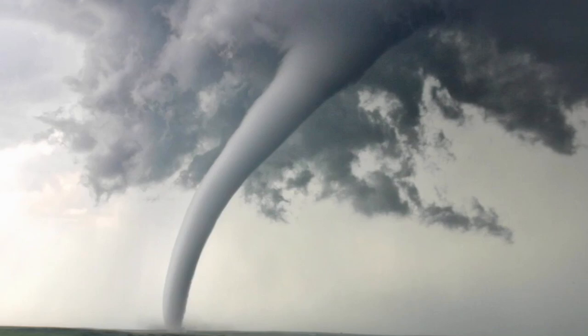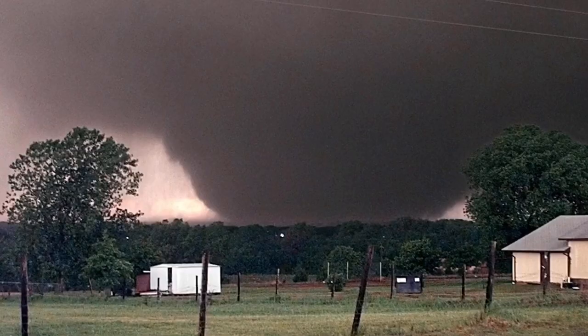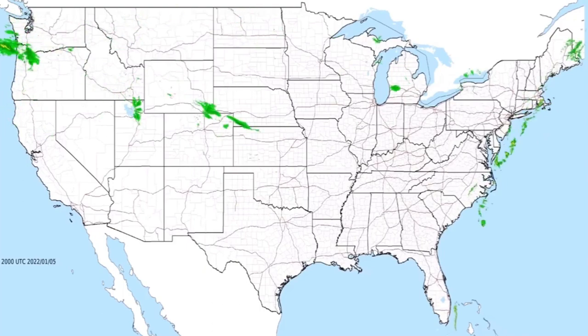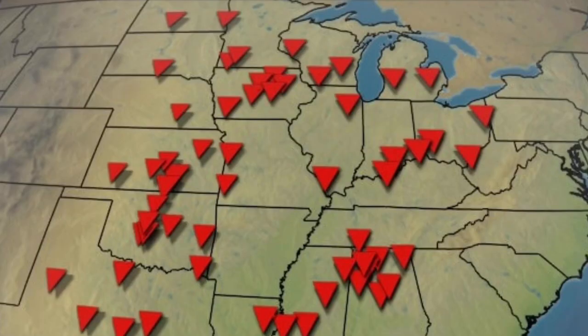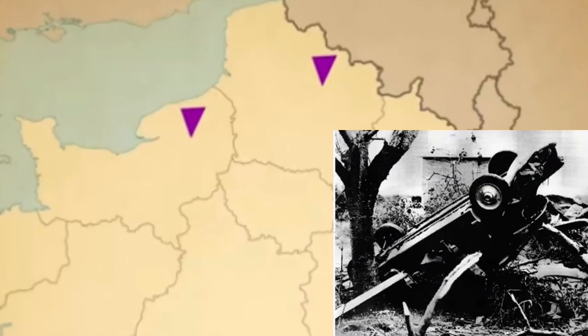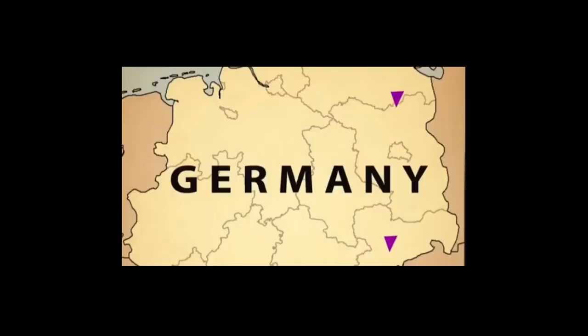Tornadoes — more specifically, F and EF5 tornadoes. Globally, 57 F5s have occurred with 9 EF5s. All 9 EF5s occurred in the US, with 50 F5s also occurring in the US. Two F5s have struck both France and Germany. Italy has had one F5 and so has Russia.